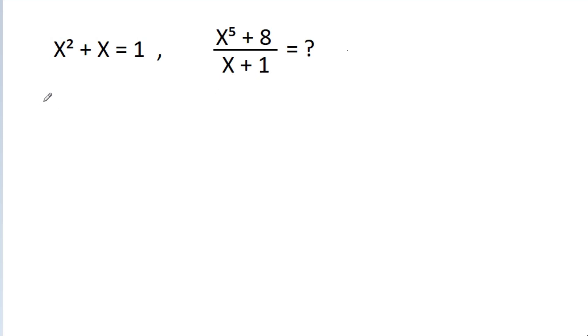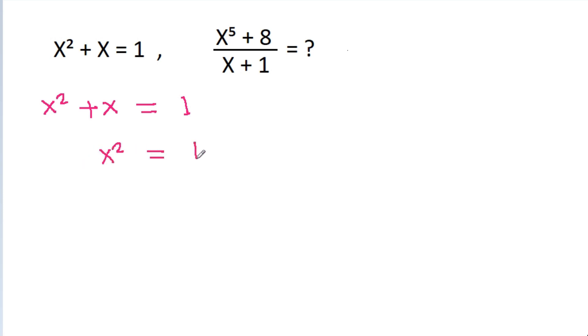We have given that x squared plus x is equal to 1, and from this x squared is equal to 1 minus x.